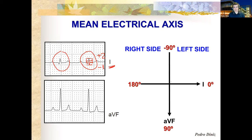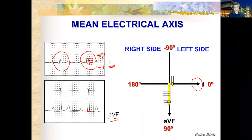Let's look at this example. In Lead I, we have one small box down and two small boxes up, so the net is approximately +1. Then in AVF, we count about eleven boxes up with virtually none negative. I plot markings toward the positive reference on each axis, and the mean electrical axis falls somewhere between those two directions. Rather than the exact number, I care more about which quadrant it falls in relative to the normal range for dogs and cats.